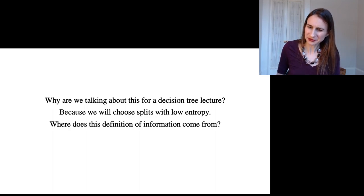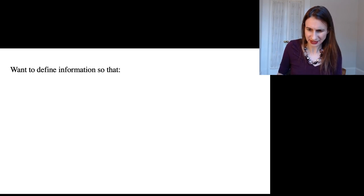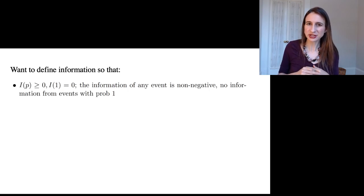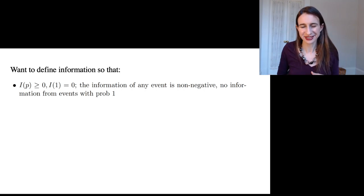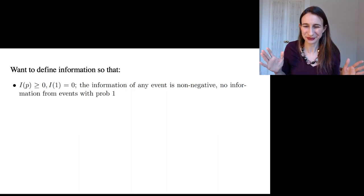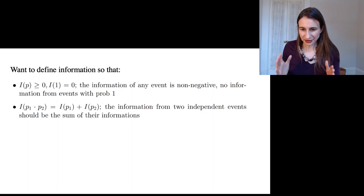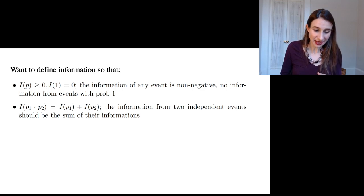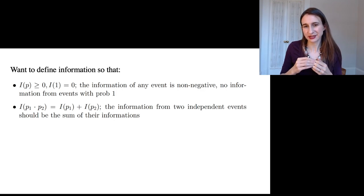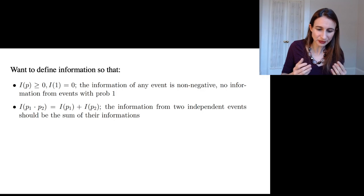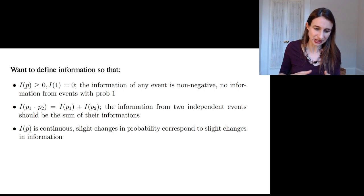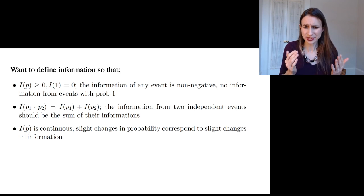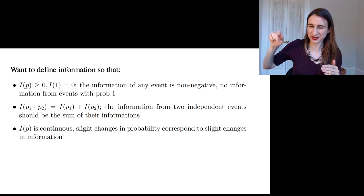So where does this definition of information come from? -log₂(p) bits, where did that come from? And the answer is actually really interesting. We want to define information so that the information is always non-negative. It would be weird if we learned something and get negative information. So information is always non-negative. And we also want to make sure that the information of an event that happens with probability 1 is zero. We're not getting any information if we know that things are going to happen.